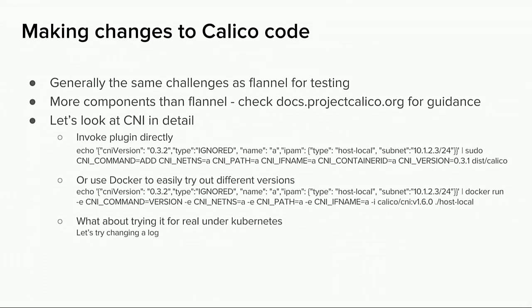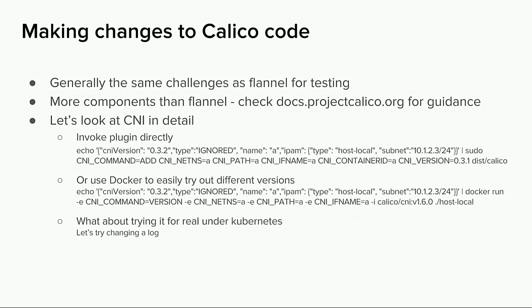Now back to Calico. It has generally the same kinds of challenges as Flannel when it comes to testing — it's written in Go so compiling is quick, but working on a distributed system and copying everything around can be challenging. It does have more components than Flannel, so I'd recommend reading the documentation at docs.projectcalico.org for guidance. Broadly the same challenges as Flannel, so I recommend using kubeadm and minikube to help with testing. There's also a testing framework checked in as well.